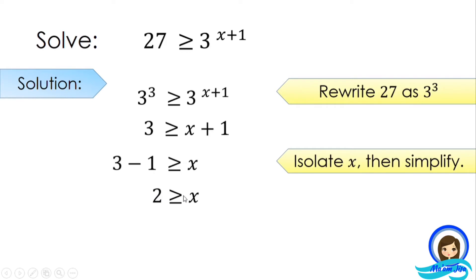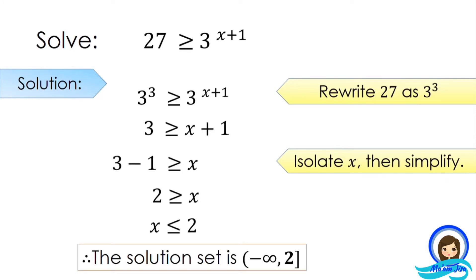Therefore, 2 is greater than or equal to x, or written as x is less than or equal to 2. The solution set is from negative infinity to positive 2, where 2 is included. We use the bracket symbol because the inequality symbol includes equal to, so 2 is included in the solution set.